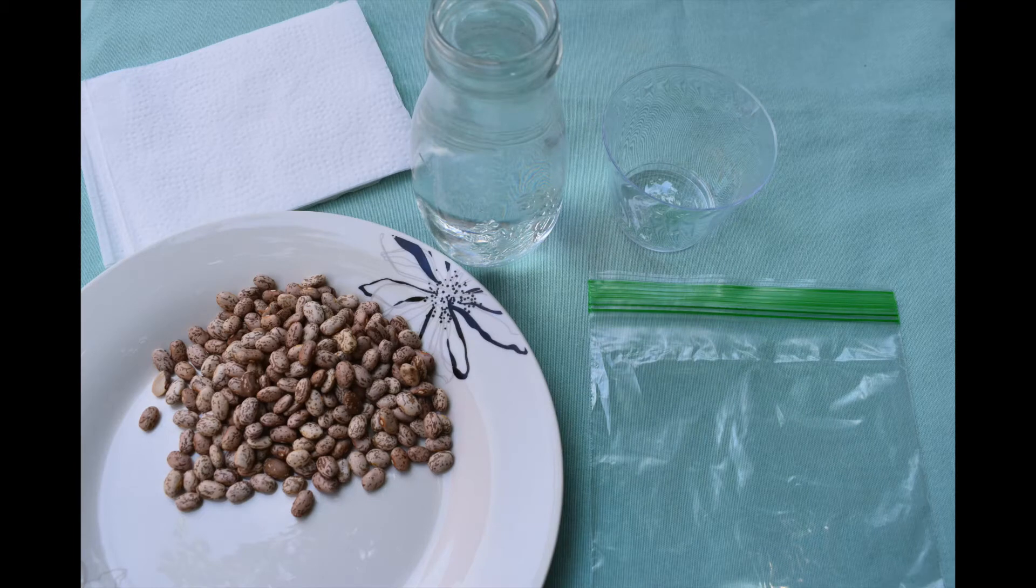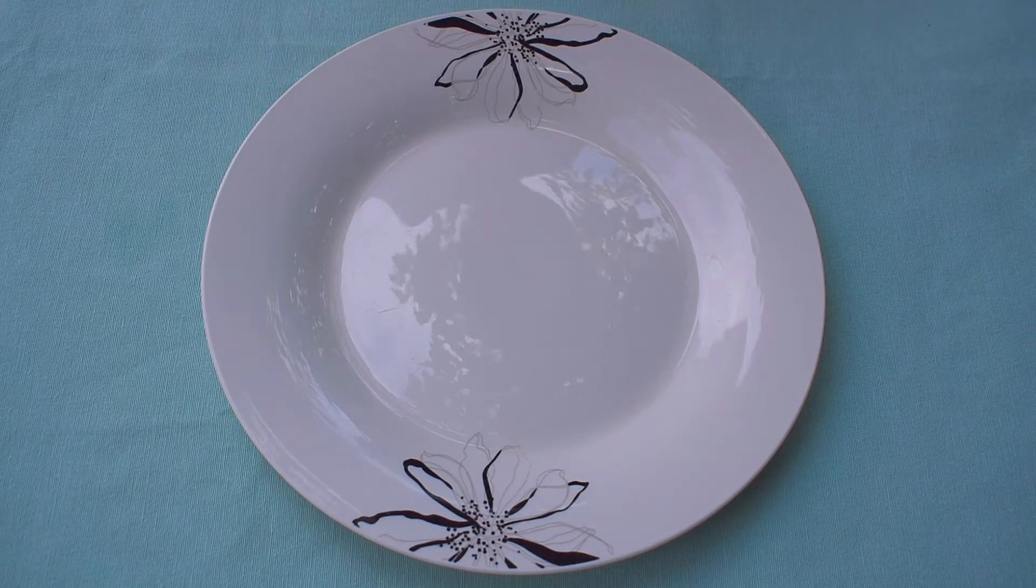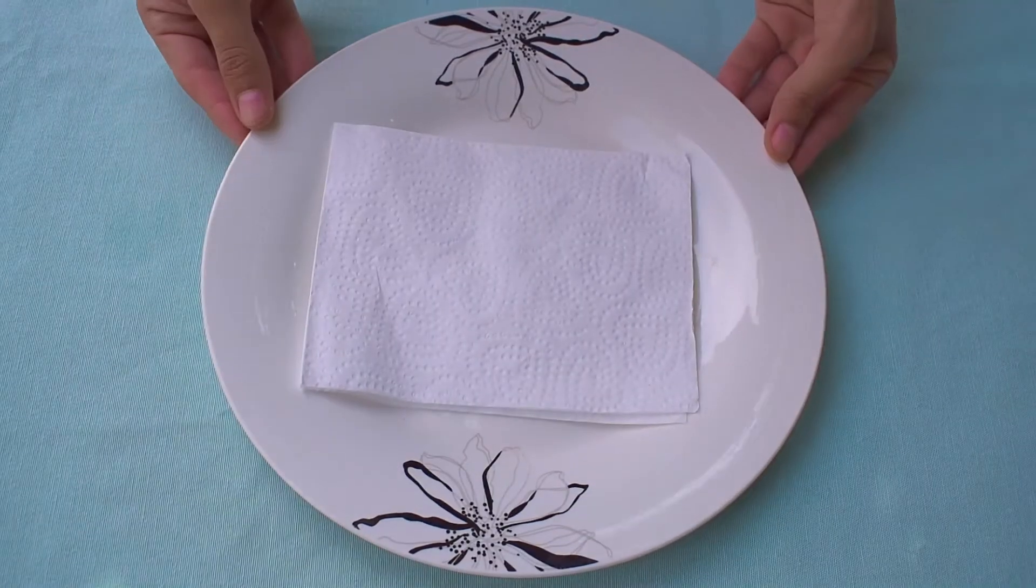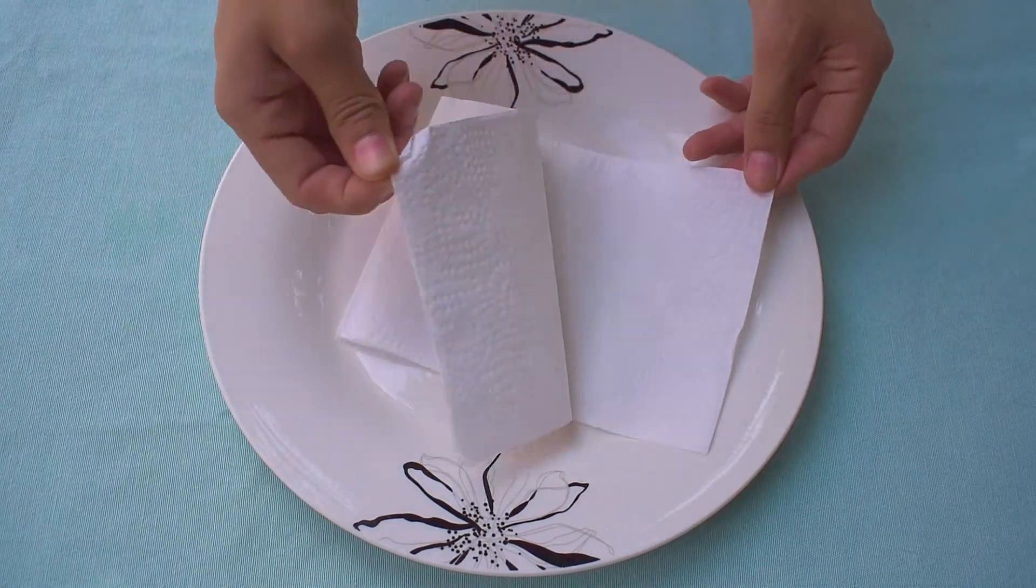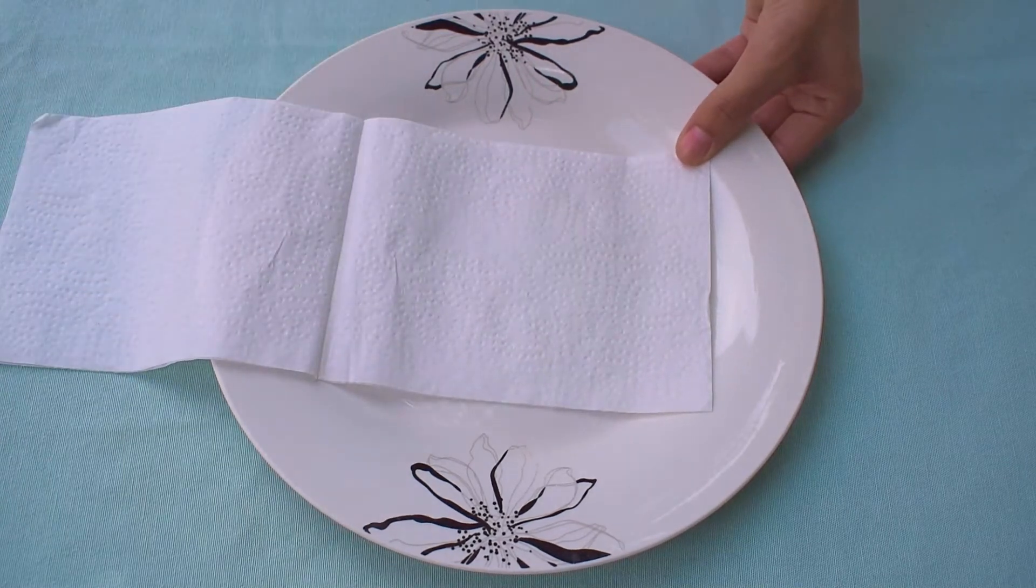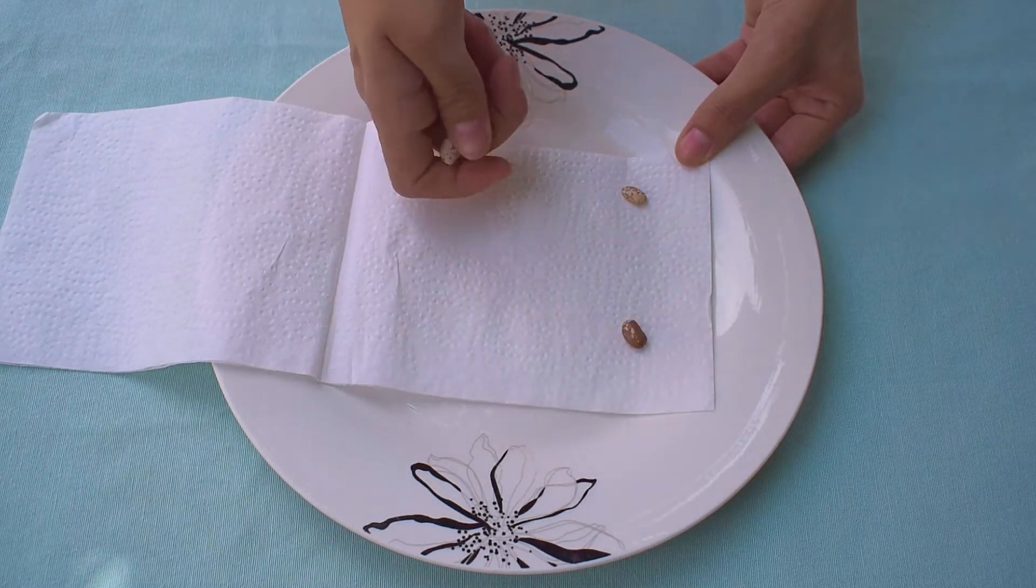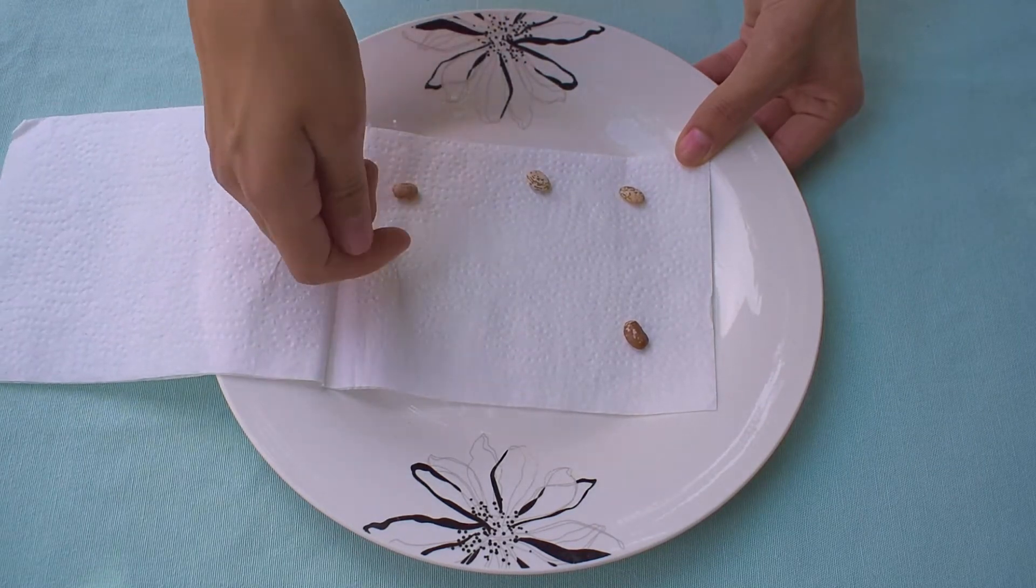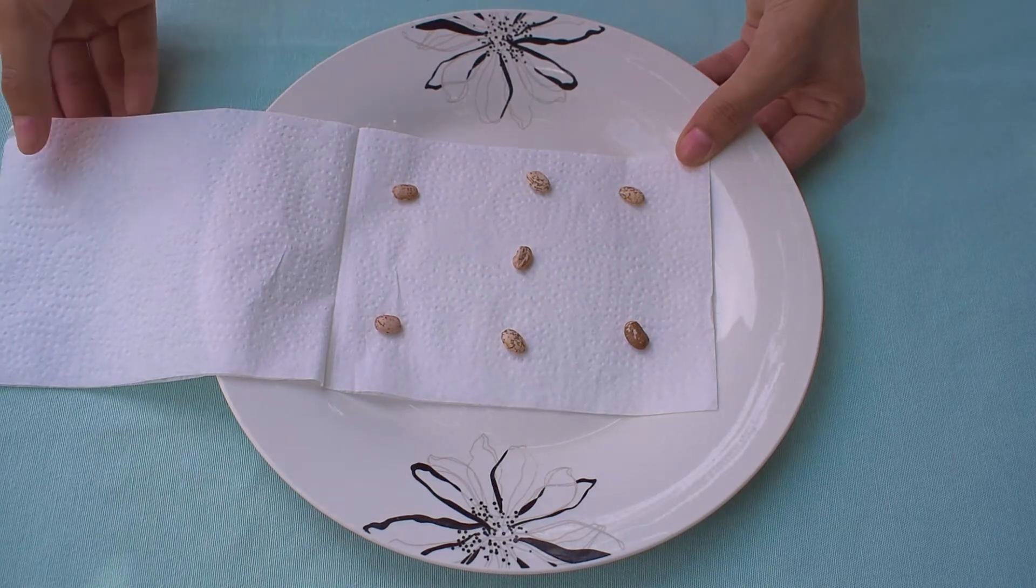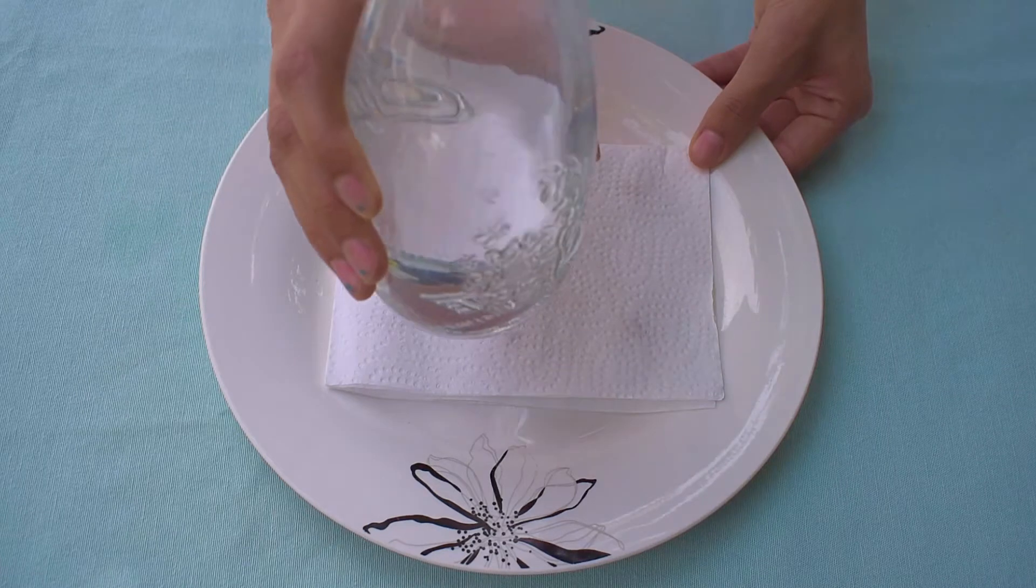Now that you have all your materials ready, let's get started with the plate. For the plate method, you're going to grab a napkin, put it on the plate, open it up, and grab about five to six beans. When you put them on the napkin, make sure that they're kind of spread out. Close the napkin and add your water.